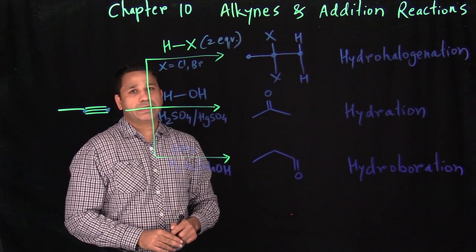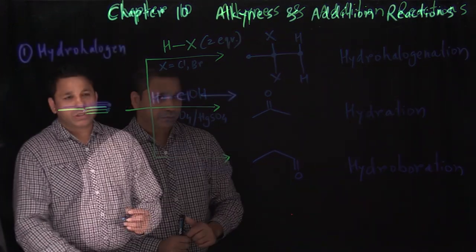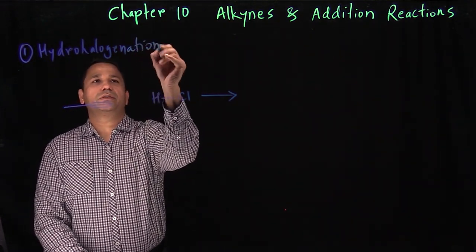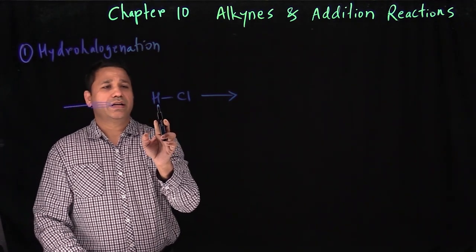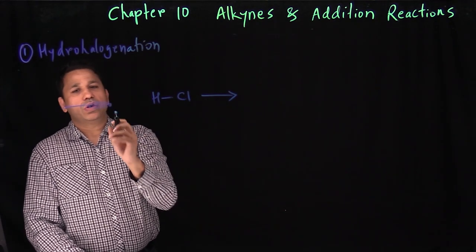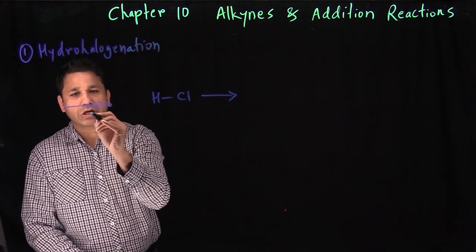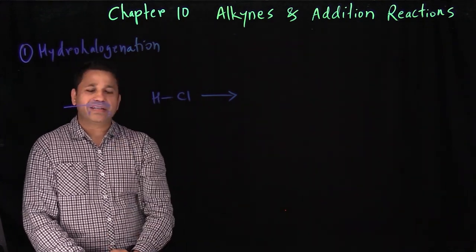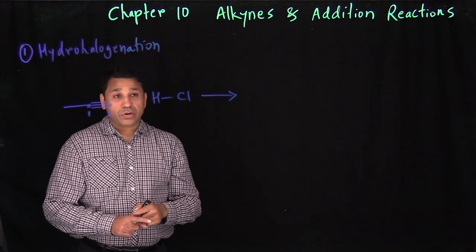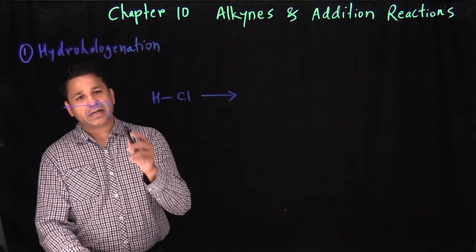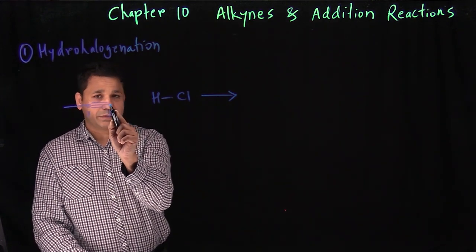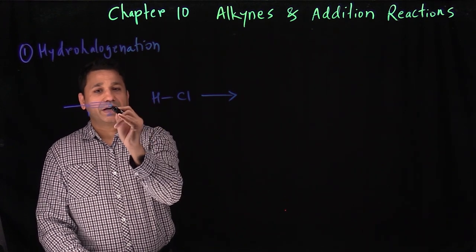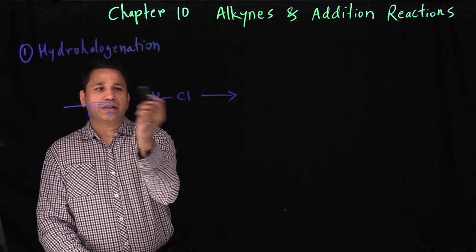The first reaction is hydrohalogenation, where we add H and Cl. With carbon one and carbon two, we need to decide which carbon gets the hydrogen and which gets the chlorine. We apply Markonikov's rule: the carbon with the most number of hydrogens gets the hydrogen. That's carbon two, so carbon one automatically gets the chlorine.